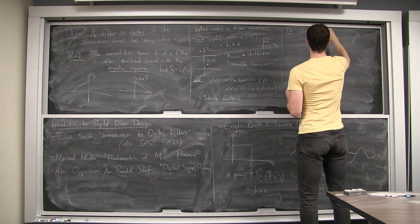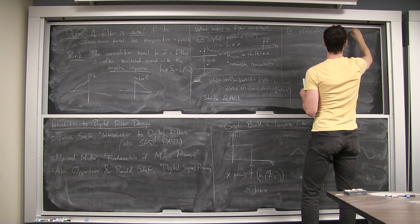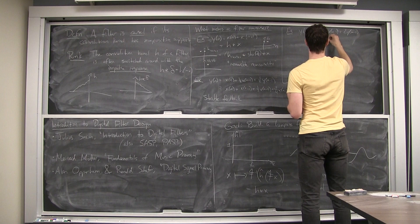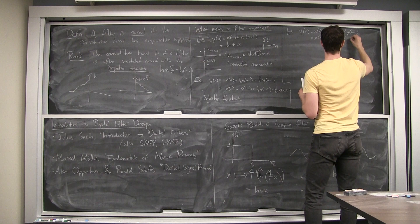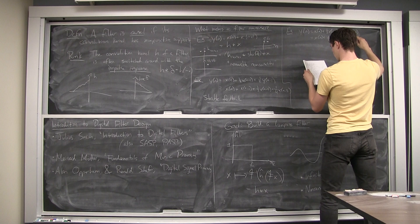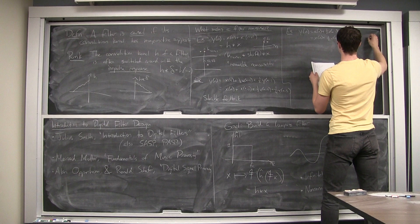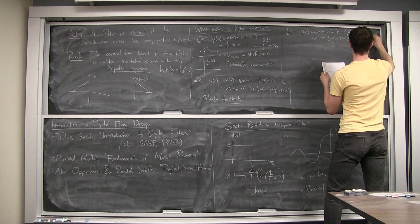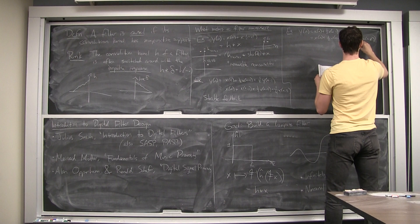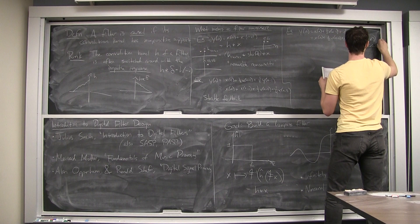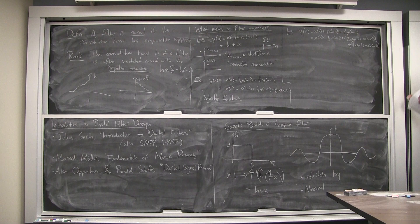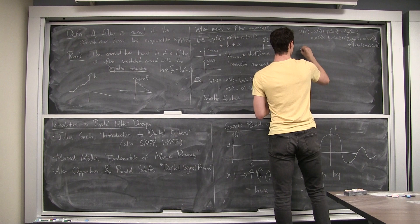Now the bad example. If instead I take the same filter but add twice the last output, this is going to be bad. When I iterate and expand, I get 2x[n−1] plus x[n−2] plus 4x[n−2] plus 2x[n−3] and so on. Now I have a geometric growth in the coefficients — which of course does not converge. This is unstable feedback.